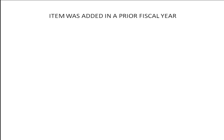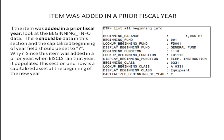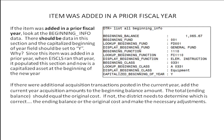If the item was added in a prior fiscal year, you want to look at the beginning balance data in data tree. There should be data in this section, and the capitalized beginning of year should be set to yes. Why? Because when EIS close ran at the end of that year, it populated this section for any new capitalized items added during that year. If there were additional acquisitions posted against this item during the current fiscal year, add those amounts to the beginning balance from data tree.